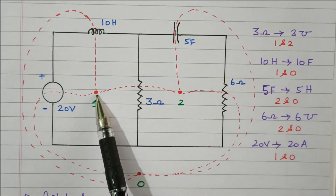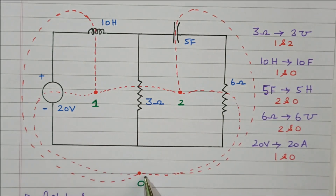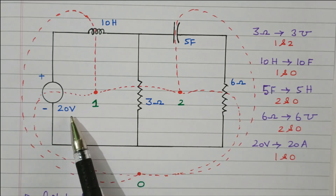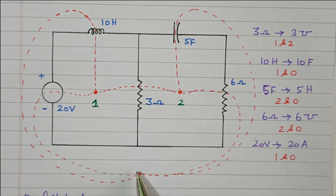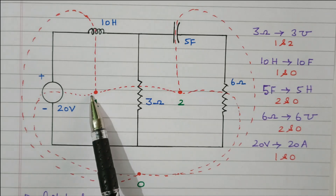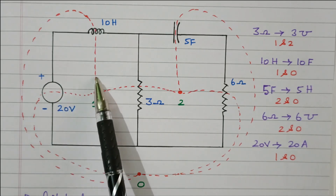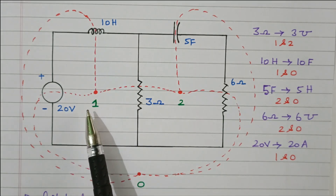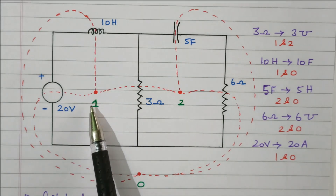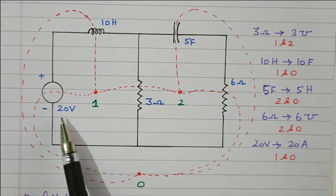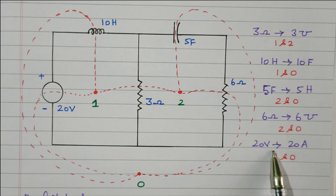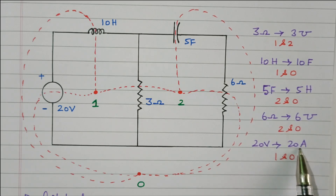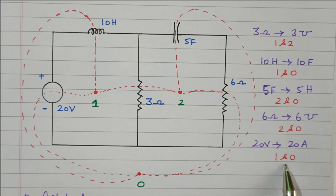Now we will see the elements available between dot 1 and 0. A 20-volt voltage source and 10-Henry inductance are both available between 1 and 0. We need to draw separate dotted lines through the voltage source as well as the inductor. The dotted line is drawn between 1 and 0 through the 20-volt voltage source. This 20-volt voltage source will be converted into a 20-ampere current source, connected between 1 and 0.